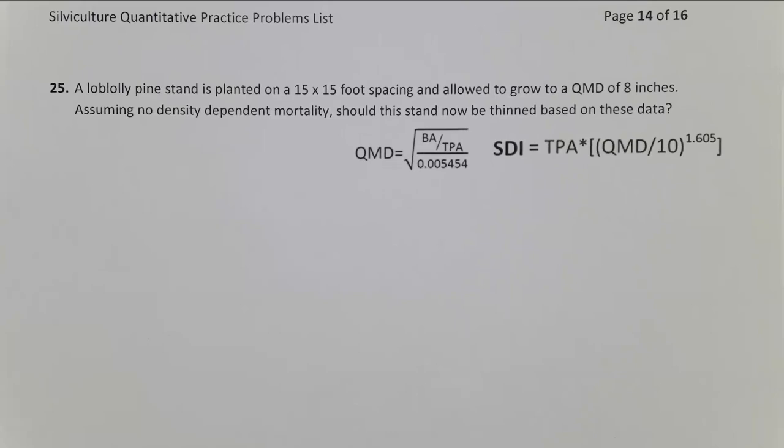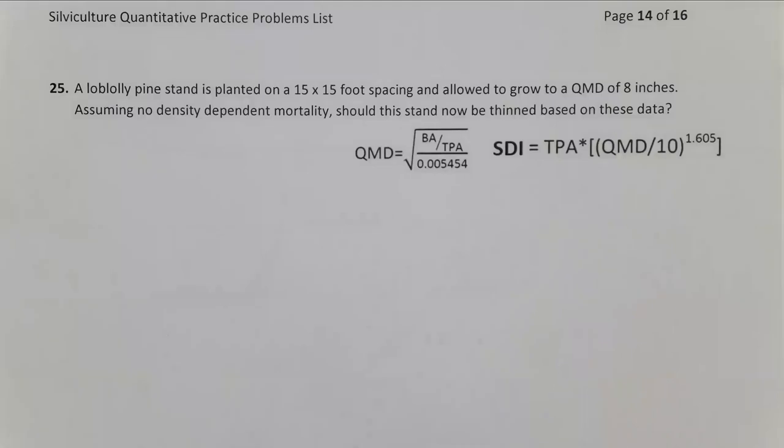Problem 25 is another SDI, relative density problem where we're trying to decide if a stand should be thinned. The difference here is we're not given trees per acre. We have to do one additional step before we get into our problem to calculate. So let's start there.